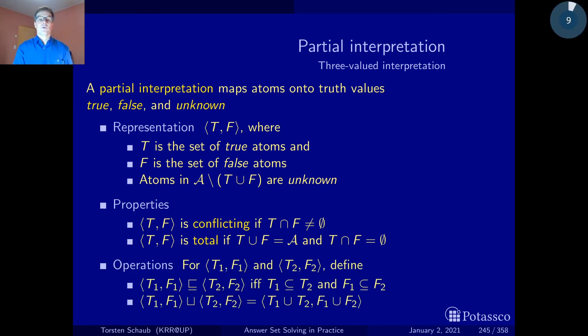We have two operations that generalize well-known set-theoretic operations. If we have two partial interpretations, we can say that one is contained in another if they are pairwise contained in each other. We can also union two of them by simply pairwise unioning the components.